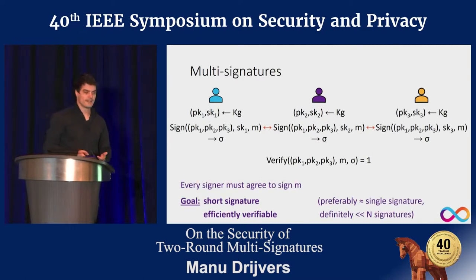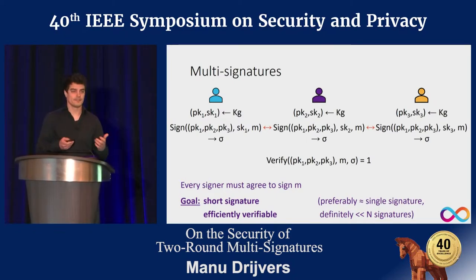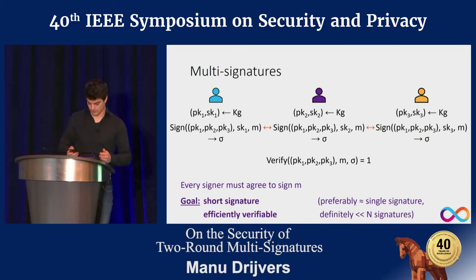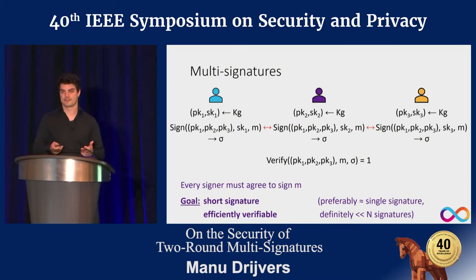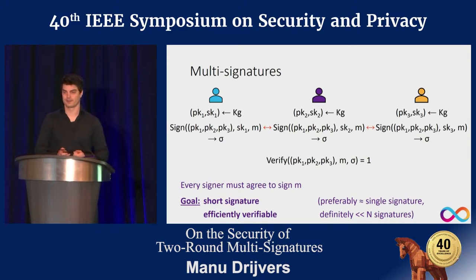The goal is that Sigma is much smaller than N individual signatures — ideally even constant size — and similarly we want verification to be very efficient, ideally as efficient as verifying a single signature. The security promise is that we can only see a valid signature if each of those signers indeed wanted to sign the message.